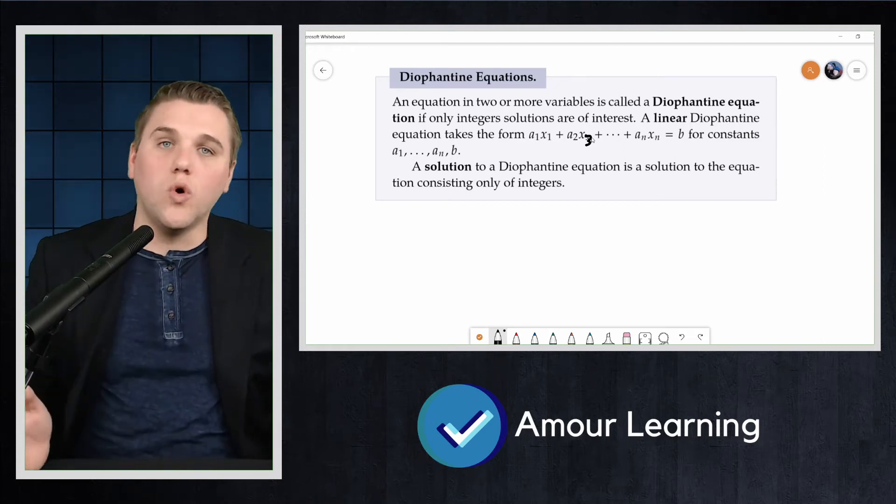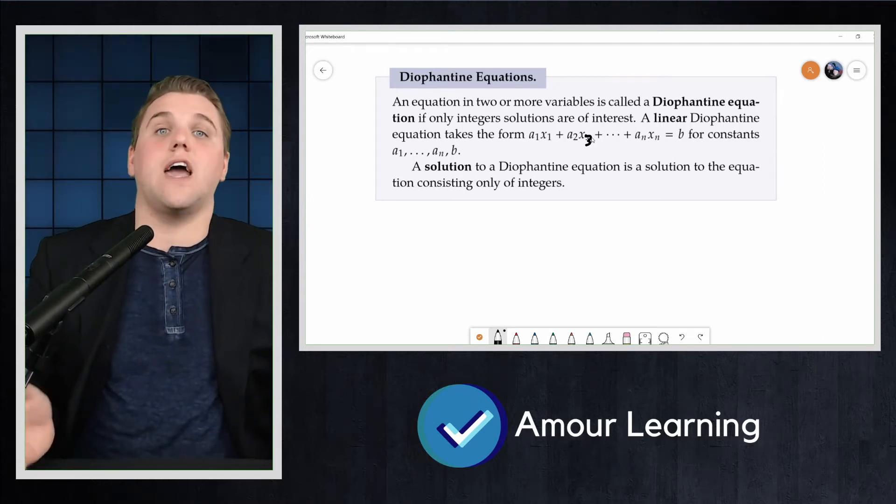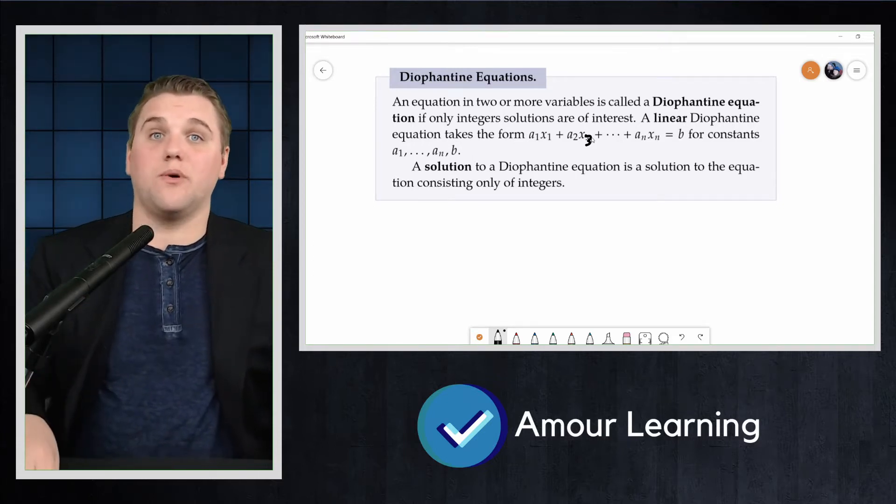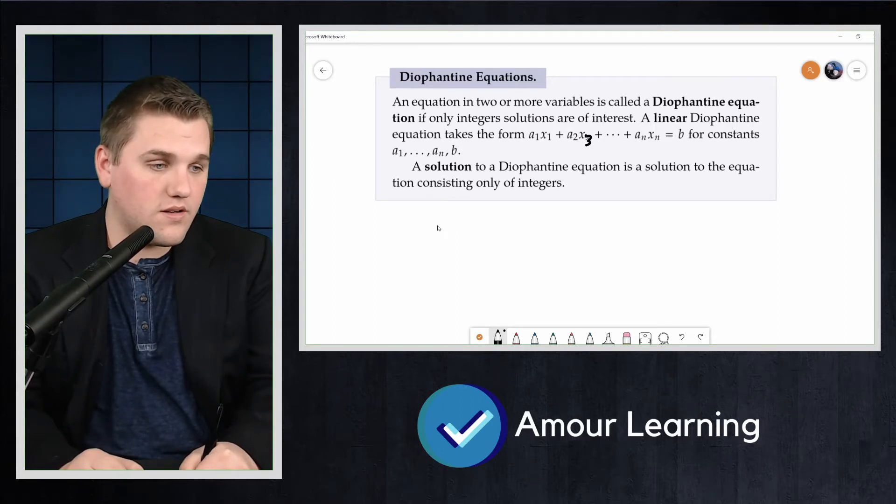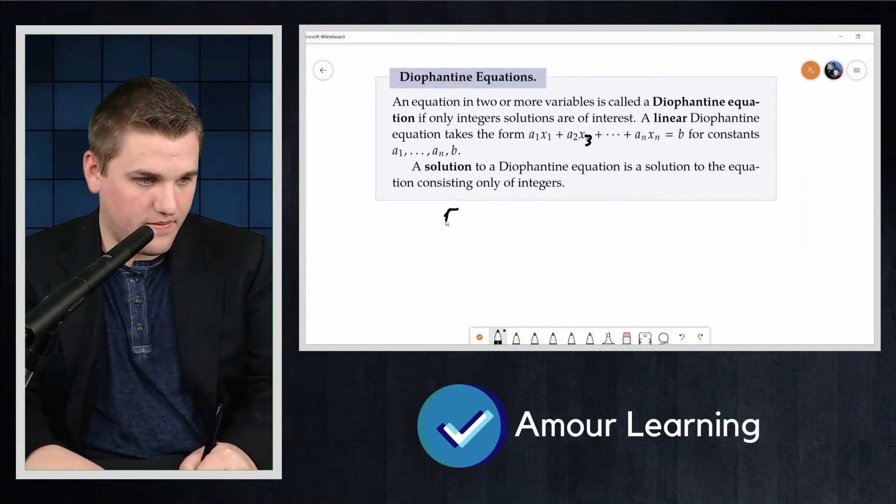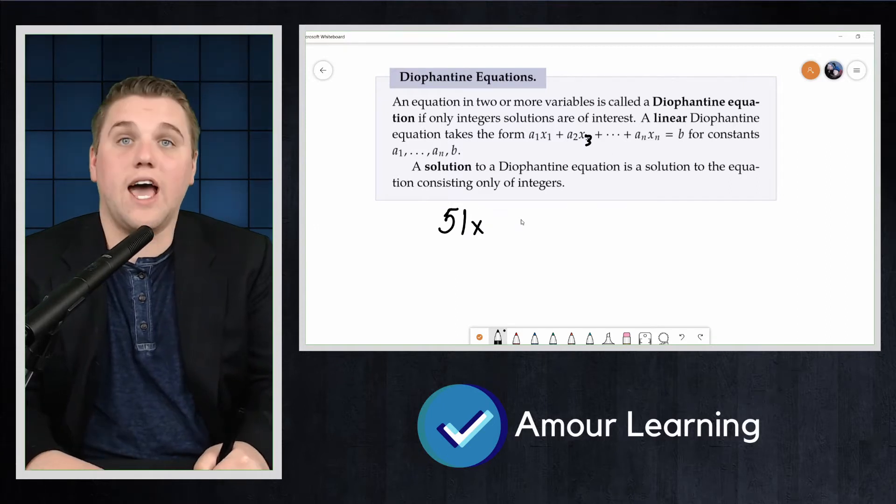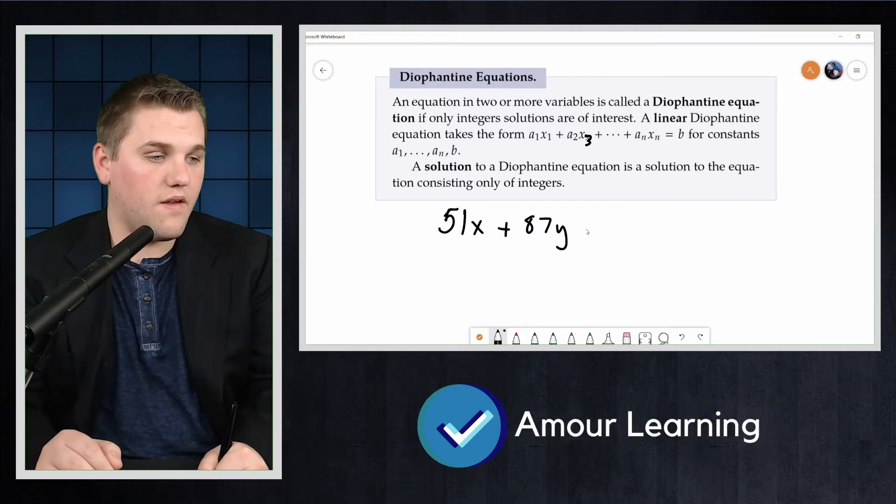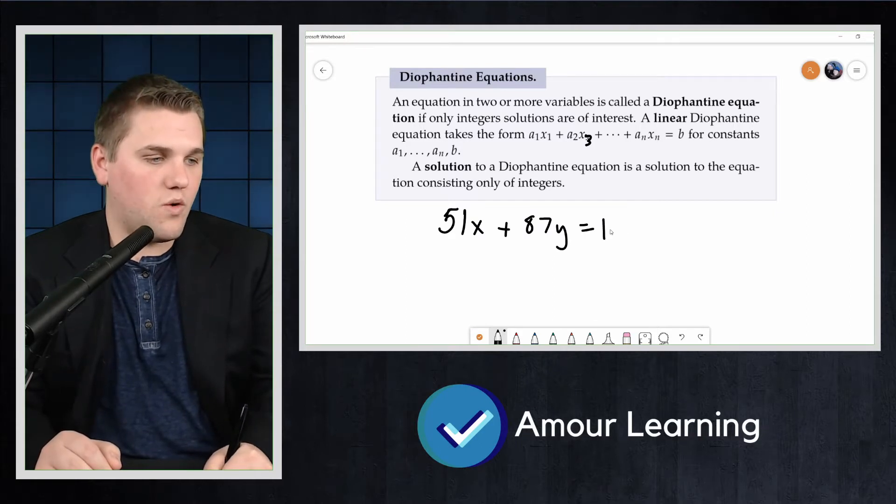We have the tools we need to solve linear Diophantine equations. We will consider as a main example the equation 51x + 87y = 123.